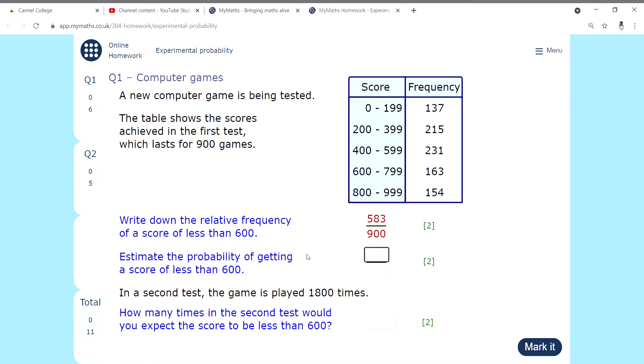Now the second question asks for the probability of getting a score less than 600. Relative frequency and probability are essentially the same thing. We usually use relative frequency for when we do an experiment to get them, and probability is more theoretical, like with a dice. In theory, each number should happen one in every six times, so the probability of getting a three on a dice is one over six. These two things are interchangeable, so I'm just going to put 583 over 900 again, because it's the same question.